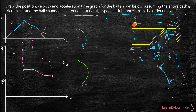For the acceleration-time graph, it's going to be the slope of the velocity-time graph. For the first part, the velocity is a horizontal line, so the acceleration is zero — a straight line on the zero axis. For the second part, also zero acceleration. For the curved part, I have a negative slope, so I'm going to have a constant negative acceleration — a straight horizontal line at a negative value. And for the last part, another zero acceleration.